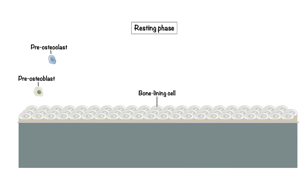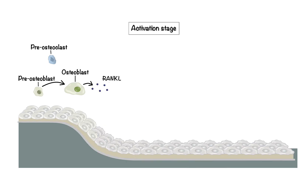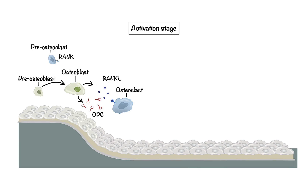Following the resting phase, the activation stage begins. During this stage, osteoblasts that have matured due to the influence of various signaling molecules secrete factors such as receptor activator of nuclear factor KappaB ligand, RANKL, and its counterpart, osteoprotegerin, OPG. These factors stimulate osteoclast precursor cells, which have RANK receptors on their surface. The interaction between RANK ligand and RANK receptor drives the maturation of osteoclast precursor cells into active osteoclasts. OPG plays a regulatory role by binding to RANKL, preventing it from interacting with RANK and inhibiting osteoclast activation. A healthy bone remodeling process relies on the delicate balance between OPG and RANKL.